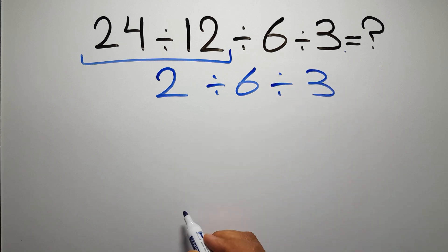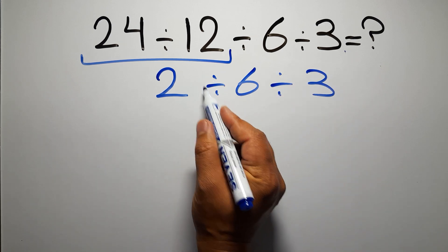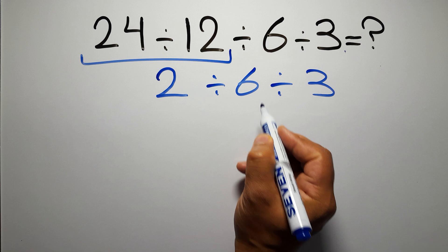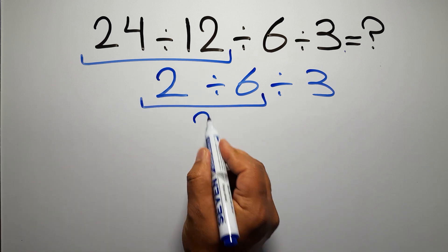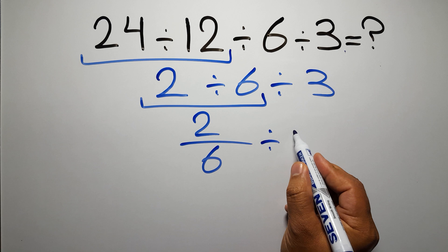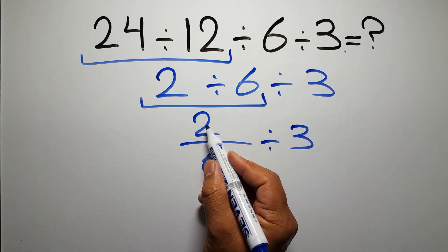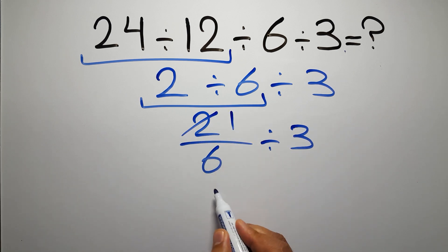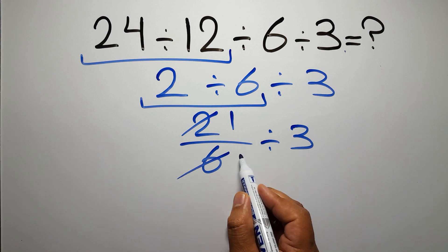Now we have to do this division. 2 divided by 6 can be written as 2 over 6, then divided by 3. Now 2 divided by 2 gives us 1 and 6 divided by 2 gives us 3, so we have 1 over 3 divided by 3.